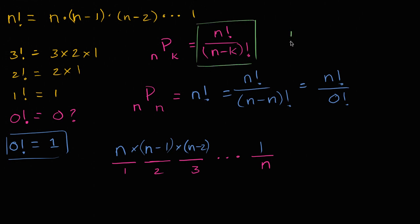So in order for this formula to apply even in the case where k is equal to n, which is this one right over here, and for that to be consistent with just plain old logic, zero factorial needs to be equal to one.